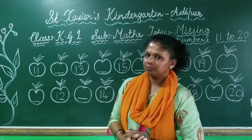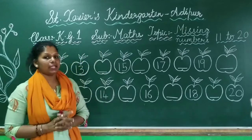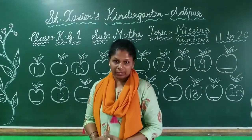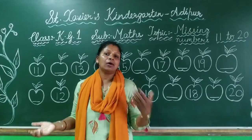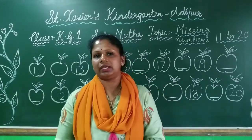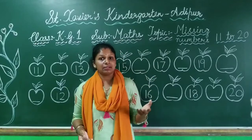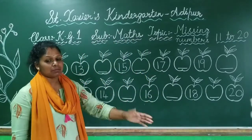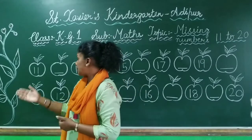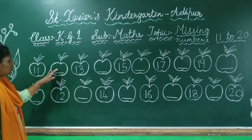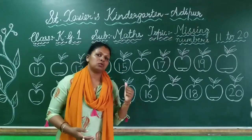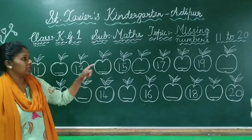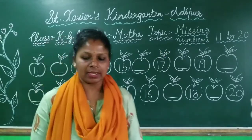Good morning children. Today in our math class, we are going to do missing numbers 11 to 20. We have learned how to write numbers 11 to 20 — we have written 1 to 10, and 11 to 20 as well. So today we will start missing numbers. What do we say is missing numbers? In our math class, missing numbers 11 to 20 is important.